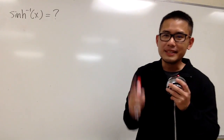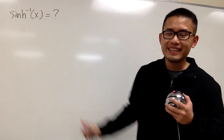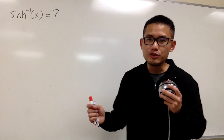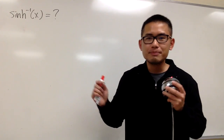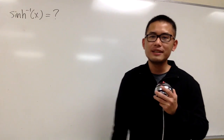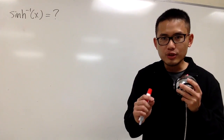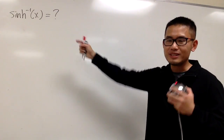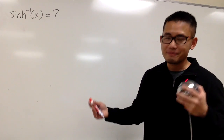I'm going to show you how to write an expression for the inverse sinh x. We know that the original sinh x is equal to e to the x minus e to the negative x, over 2. For the original, we have e to the something — maybe for the inverse, we will end up with ln of something.